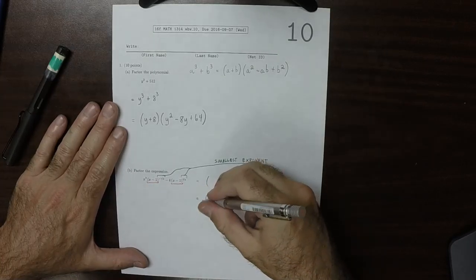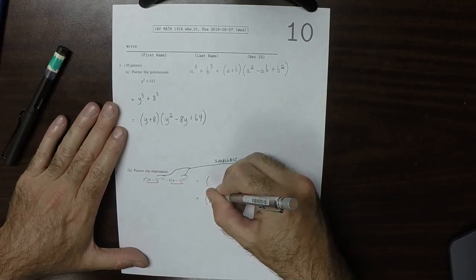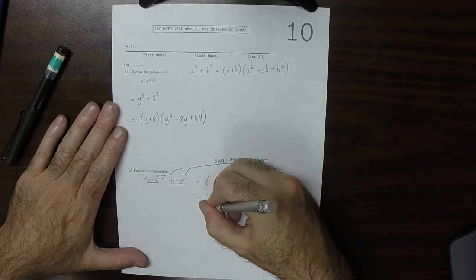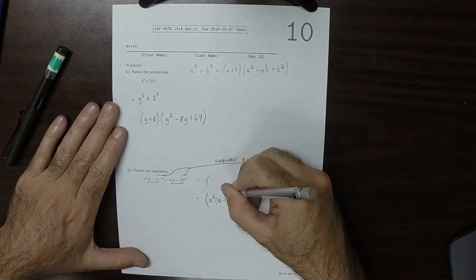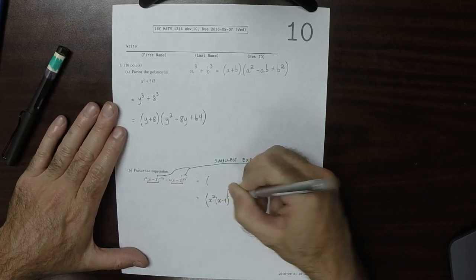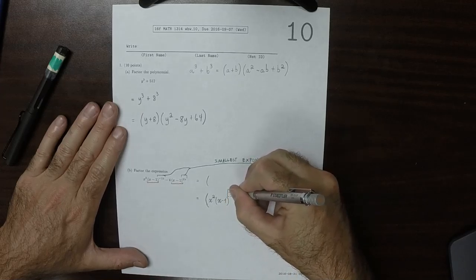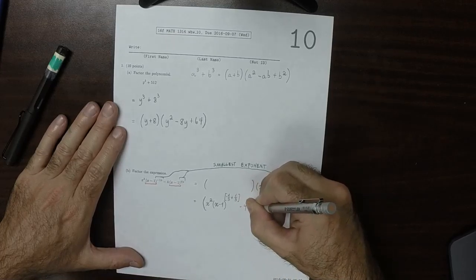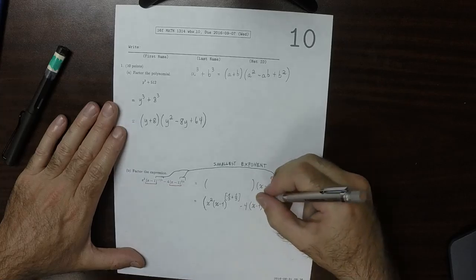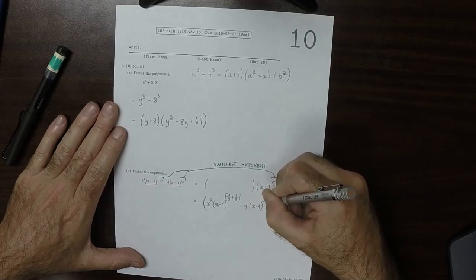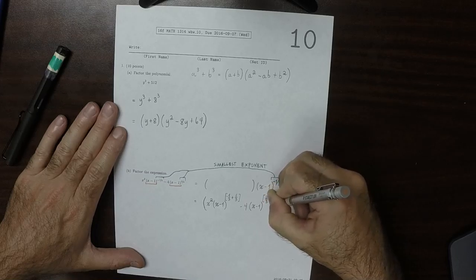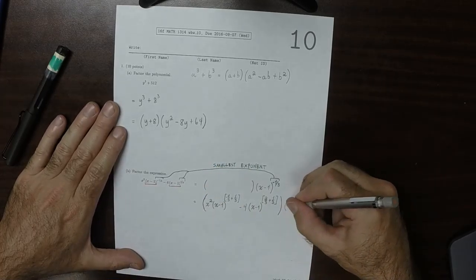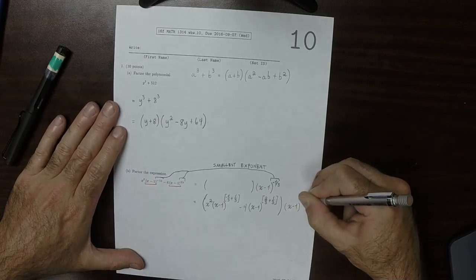So we're subtracting negative 1/3. This would be x² times (x minus 1)^(-1/3 minus negative 1/3) minus 4 times (x minus 1)^(2/3 minus negative 1/3), all multiplied by (x minus 1)^(-1/3).